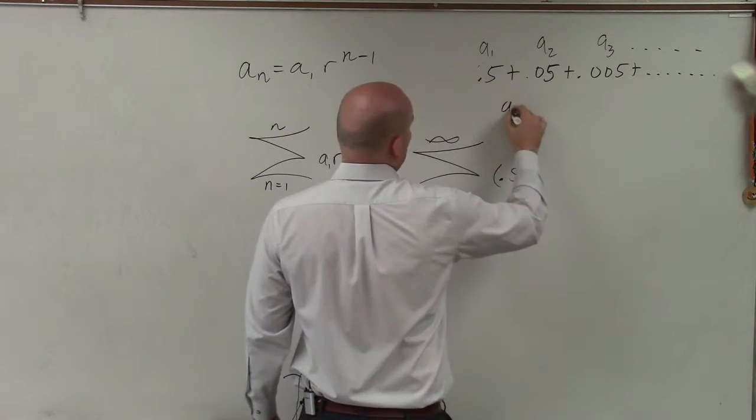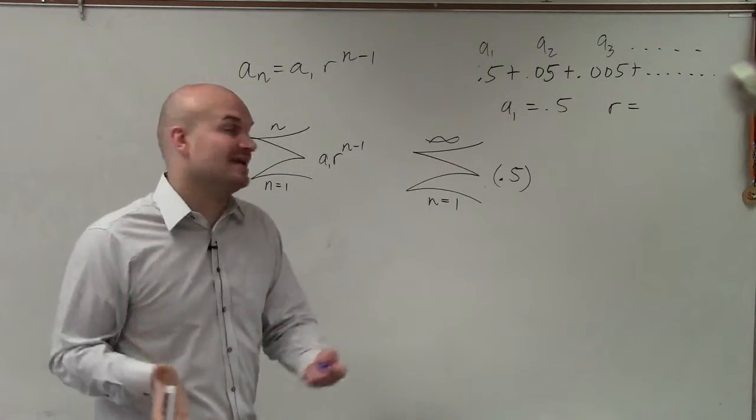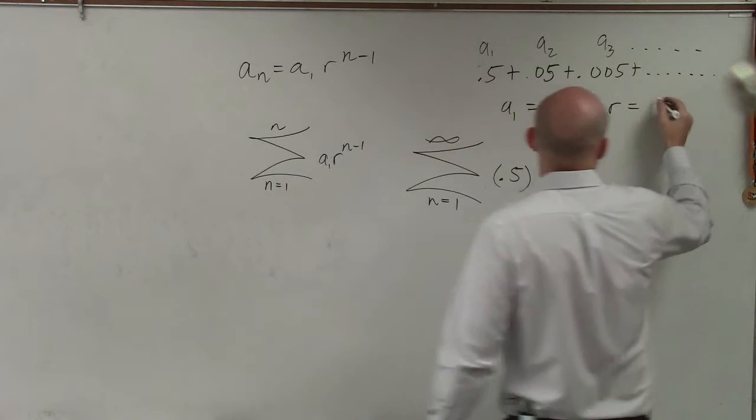Now what we need to do is determine what our r is. To determine r, we just take any value in our sequence and divide it by its previous term to determine the ratio.